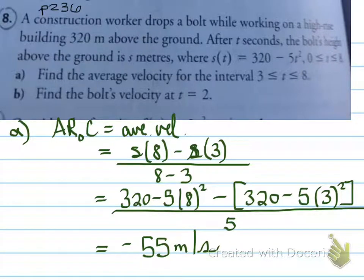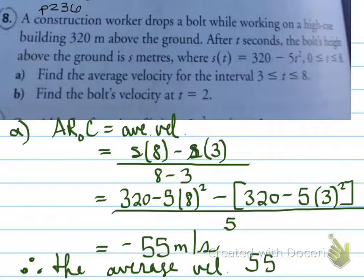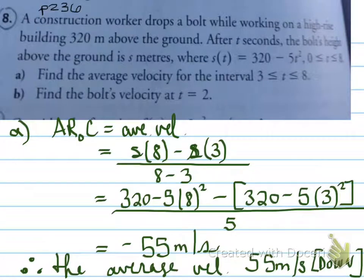Now, this is not an acceptable final answer. Your final answer is going to be, therefore, the average velocity is 55 meters per second, and then you put in square brackets the word down, meaning that it's moving in a downwards direction during that interval. So the slope of that line is moving in a downwards direction. Part B says find the bolt's velocity. So that's what we're going to do in the next question.